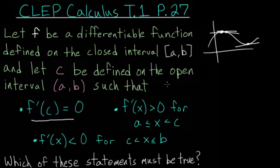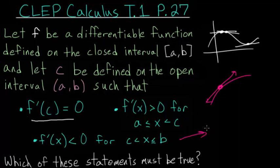The next piece of information tells us that between points a and c, the slope of the tangent line is positive. And for the last condition, between points c and b, the slope of the tangent line is negative.